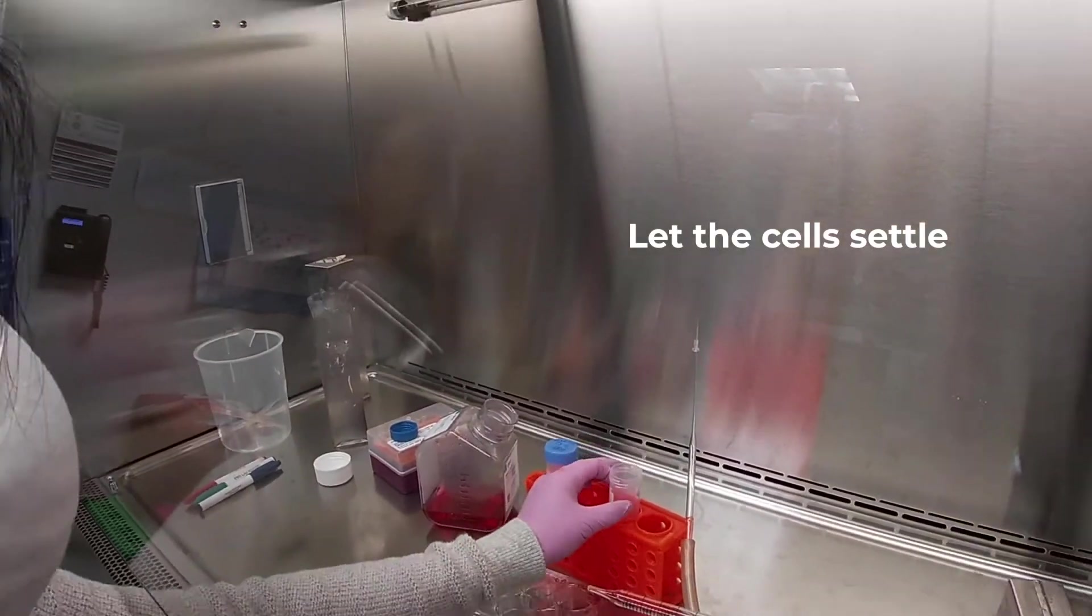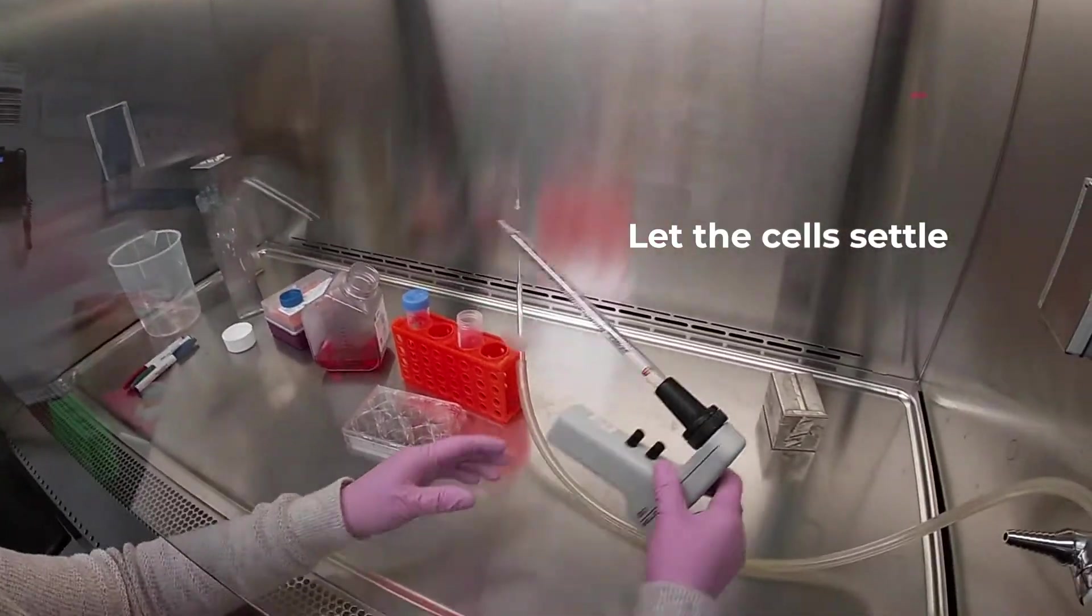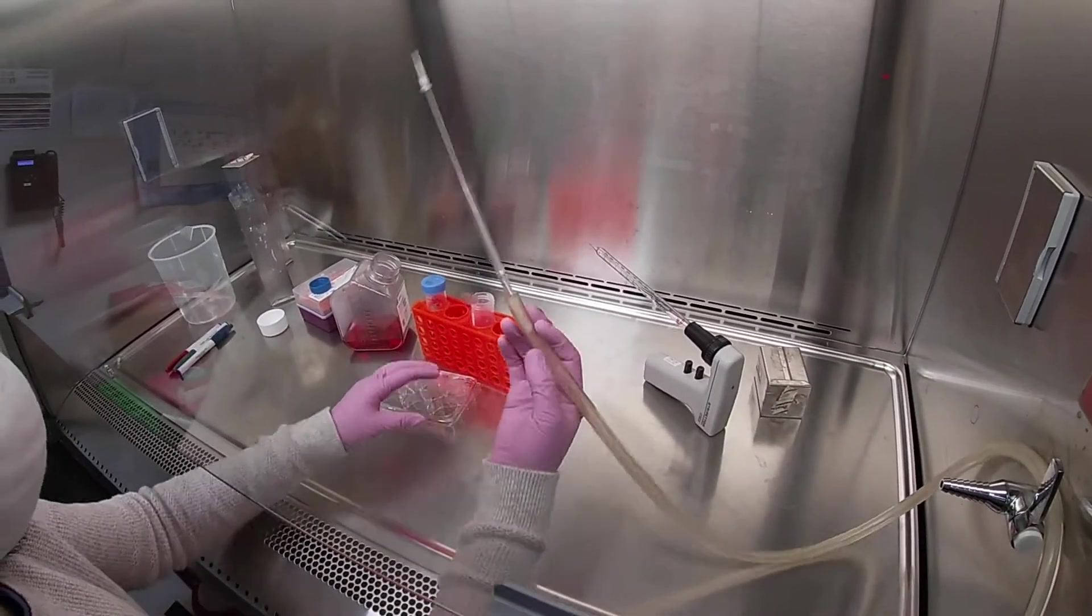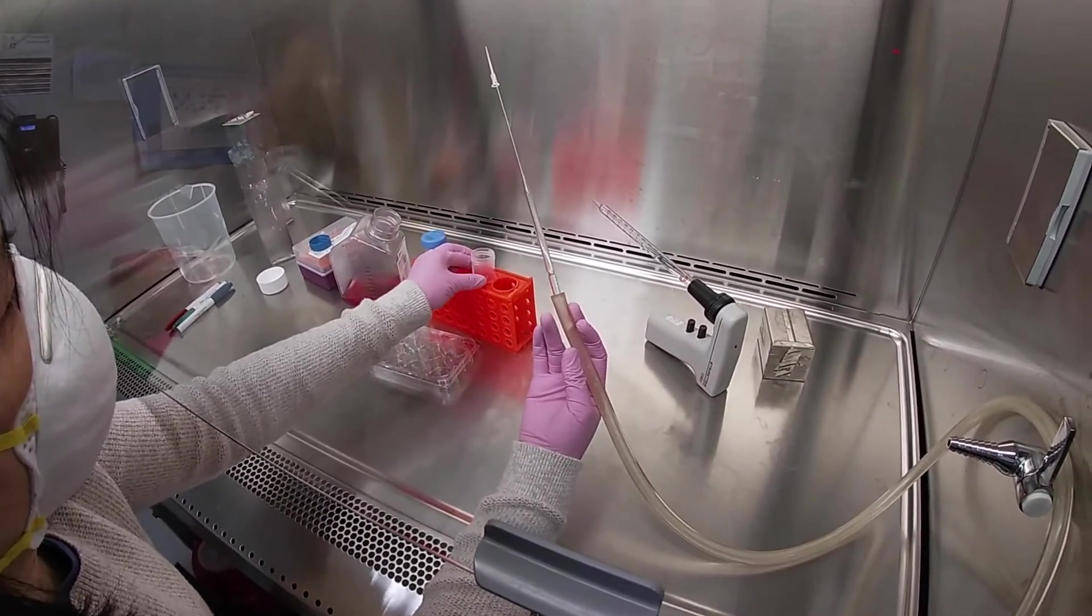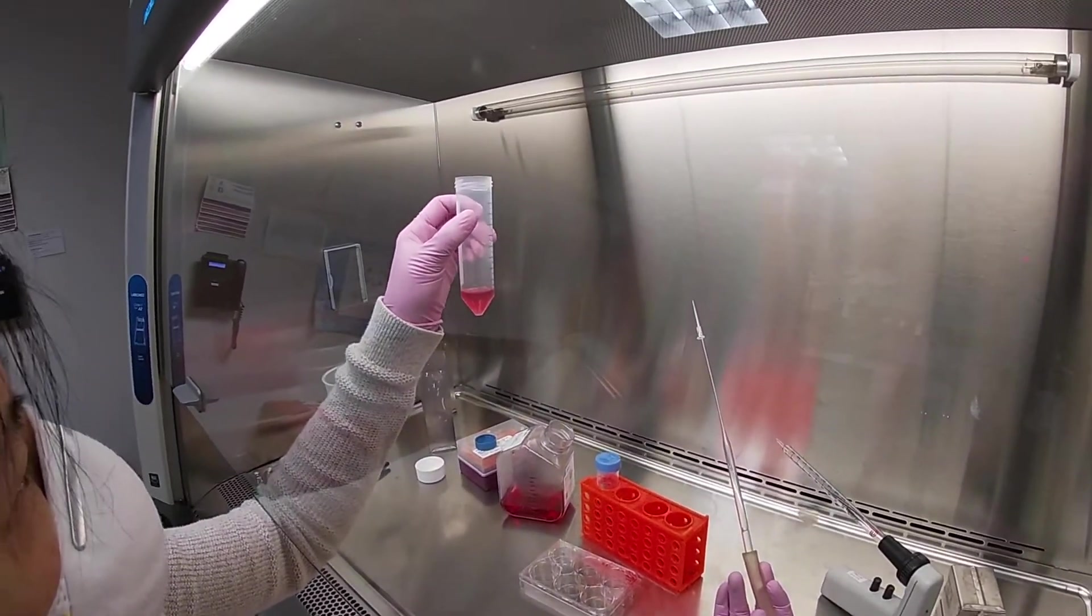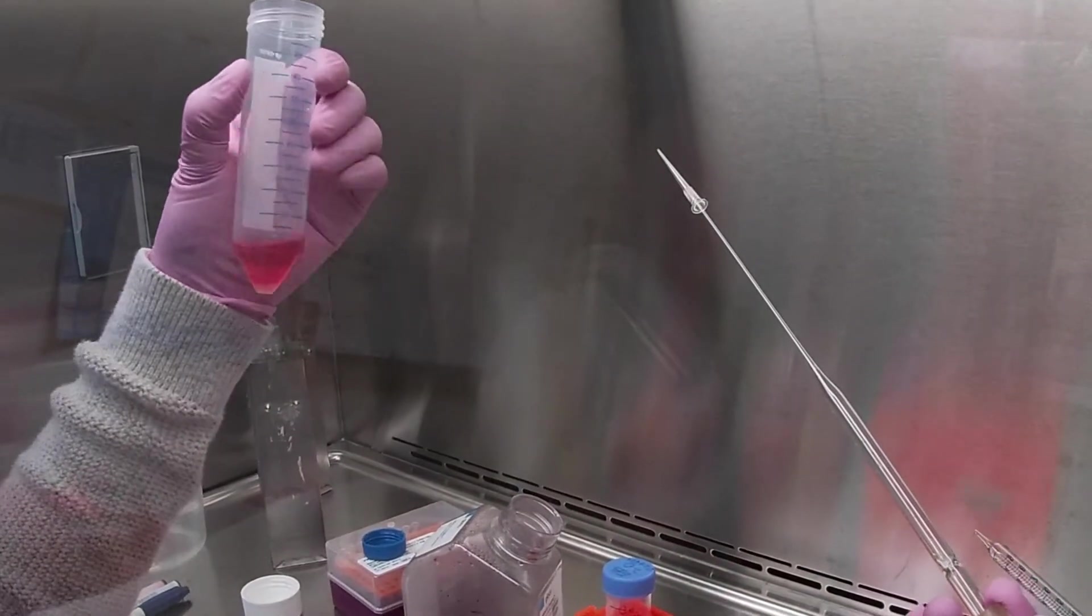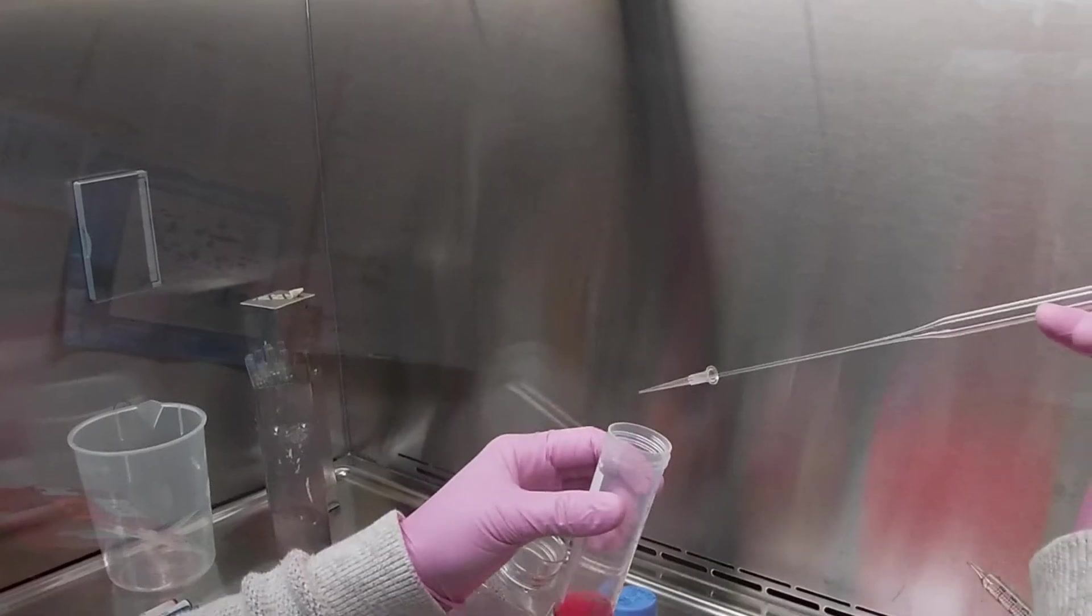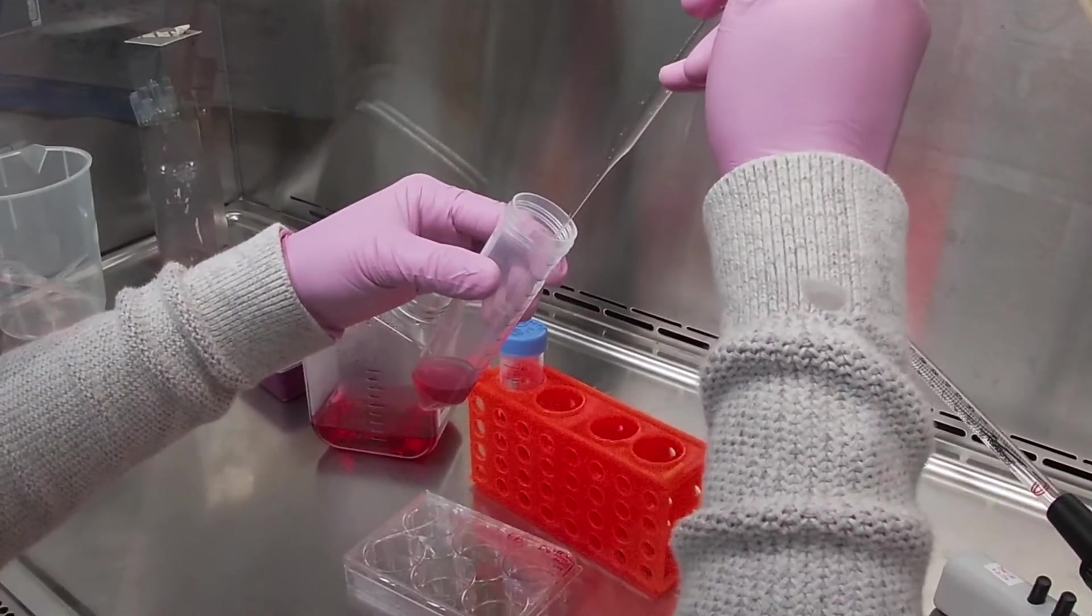Every time you rinse the cells, make sure you let them settle before you take up any of the DMEM. Our previous media actually contained knockout serum. We don't want traces of knockout serum to continue on in the culture because our EB20 media does not have knockout serum. We are going to want to rinse quite a few times.